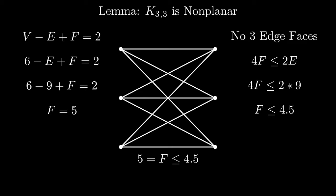We can combine the two sides of this, and end up with 5 is less than or equal to 4.5, which is a contradiction. So K3,3 is nonplanar because it does not satisfy Euler's formula.